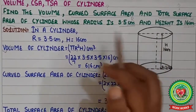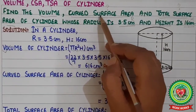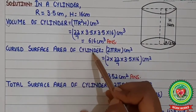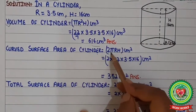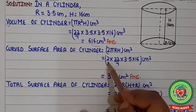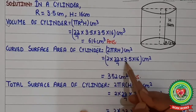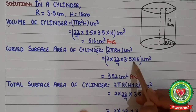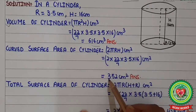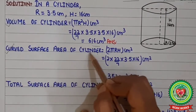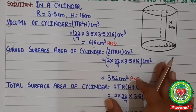Next, we find the curved surface area. The formula for curved surface area of a cylinder is 2πrh in cm². Substituting: 2 × (22/7) × 3.5 × 16. After doing the cutting and multiplication, we get 352 cm² as the curved surface area of the cylinder.